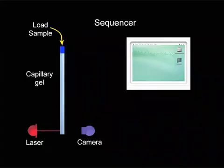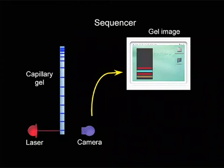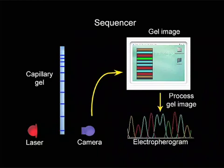As a DNA fragment migrates through the polymer, it is hit with a laser beam that excites the fluorescent dye attached to the terminal base of the fragment. A camera captures an image of the fluorescence. And a computer converts it to a readable form that we call an electropherogram.